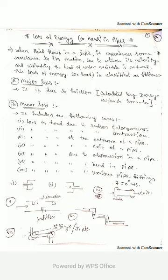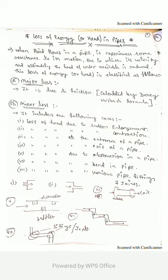Minor losses are the losses due to change in the magnitude or direction of velocity. How does the velocity change? These changes are due to changes in the geometry of the pipe — this is why we have minor losses.